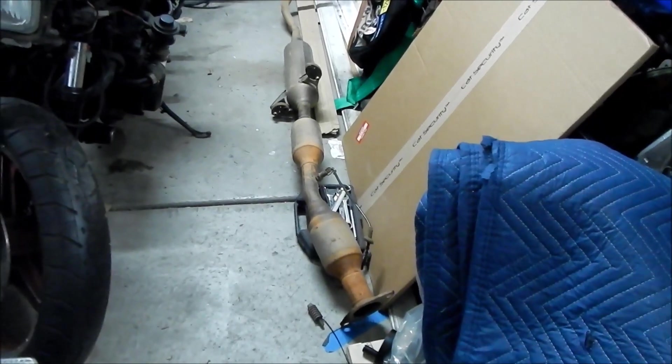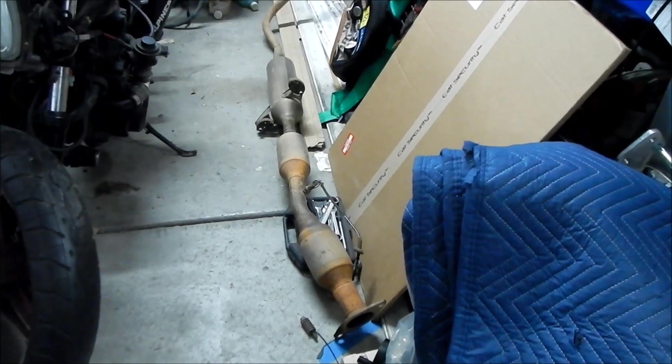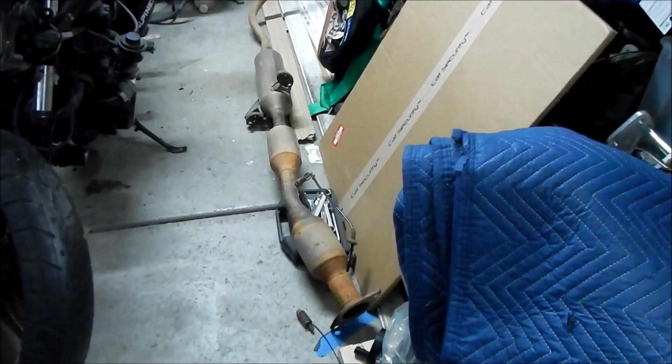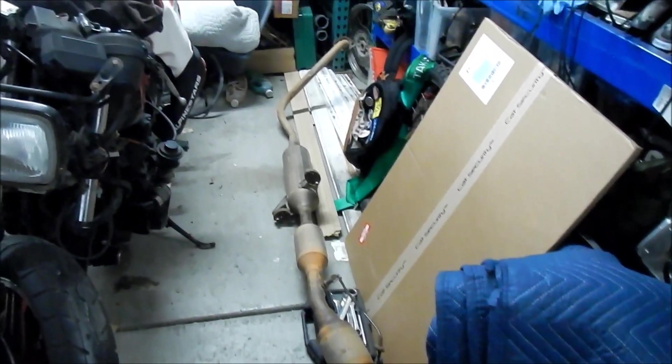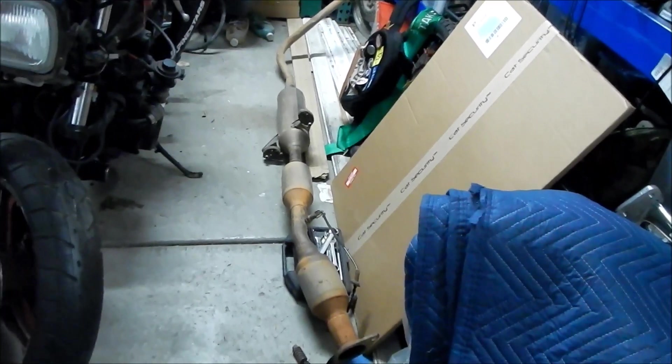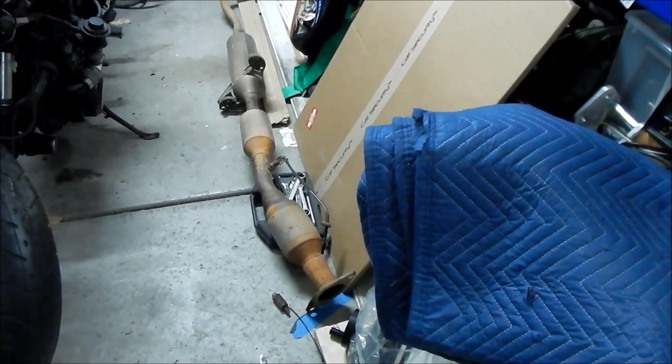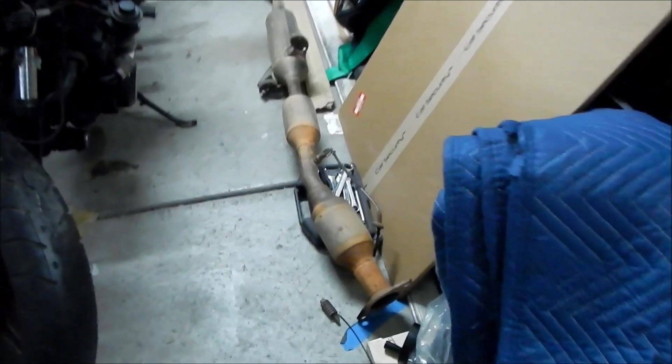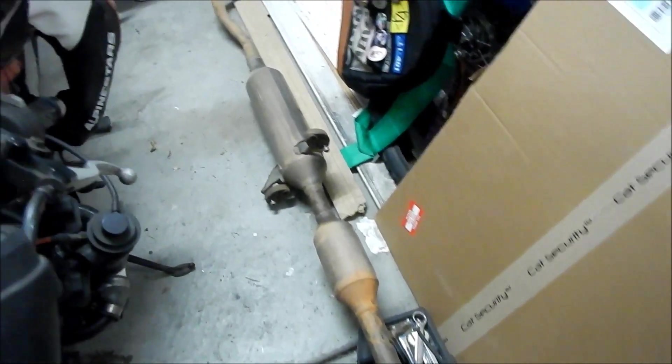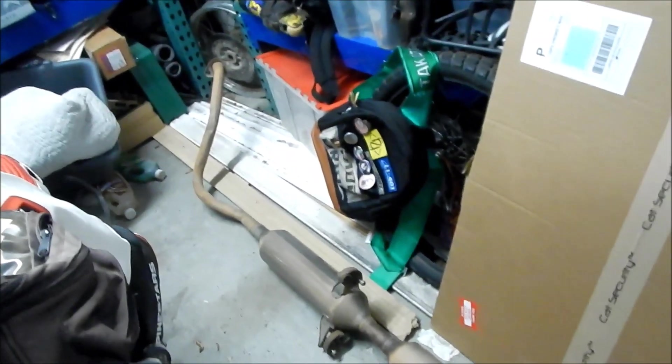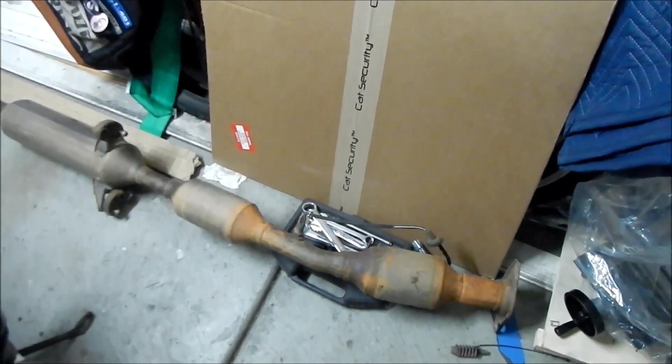And they don't even check the tailpipe on this in California. All they do is hook up an OBD2 scanner to it, or like a dongle up to the computer and it reads all the diagnostic stuff. And if nothing pops up, then it passes. They don't run it on a roller. They don't run it on the roller slash dyno machine. All they do is hook it up to the OBD2 check and then that's it.